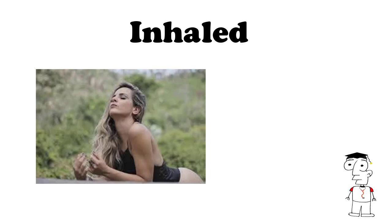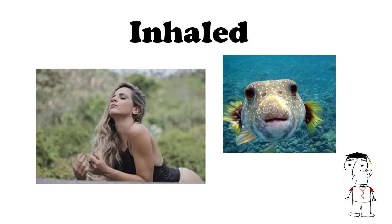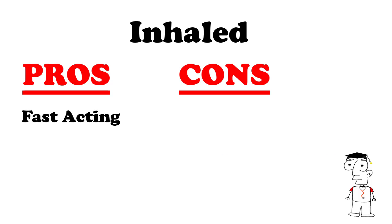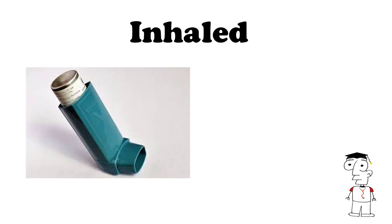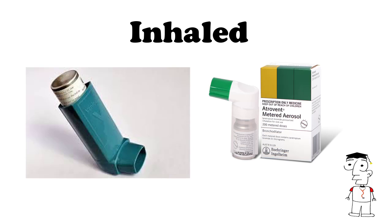Inhaled medications are breathed in and come in the form of puffers. Pros include very quick absorption as the lungs have a huge surface area, and they can target the lungs easily without affecting the entire body. Cons are that they can be misused fairly easily, and medications can end up in the mouth instead of being breathed into the lungs. Examples include Ventolin and Atrovent.